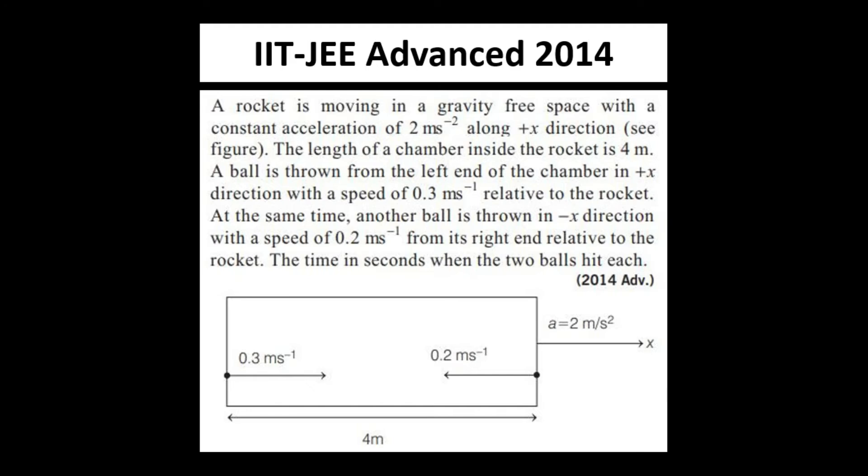Hello dear students, let's see this very good question of IIT-JEE Advanced 2014. The question involves relative motion and kinematics. The question states a rocket is moving in a gravity-free space with a constant acceleration of 2 meters per second squared along the positive x-direction as shown in the figure. The length of the chamber inside the rocket is 4 meters.